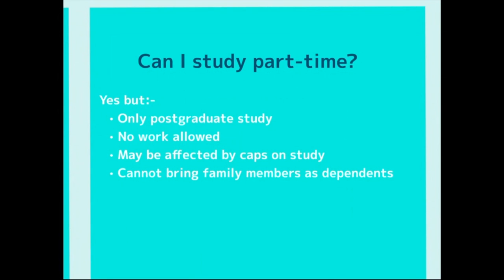It is now possible to study a postgraduate course in the UK on a Tier 4 visa part-time — this has been available for about a year. However, you won't be allowed to work if you're a part-time Tier 4 student. So if you want to work in the UK during your studies, studying part-time won't allow that. It may also affect caps on the time you can study in the UK. You also cannot bring your dependents — your spouse, civil partner, unmarried partner of more than two years, or children under 18 — if studying part-time.